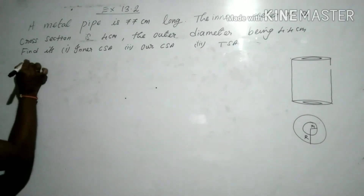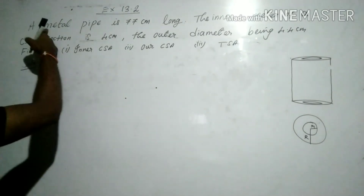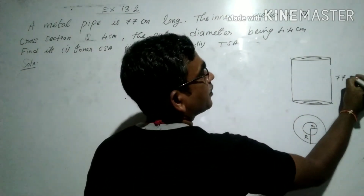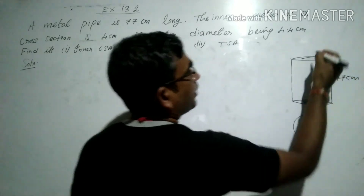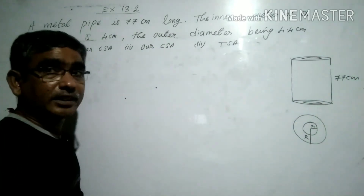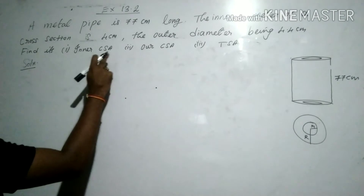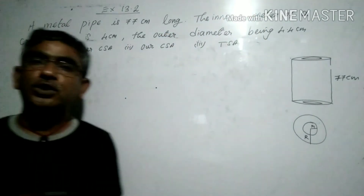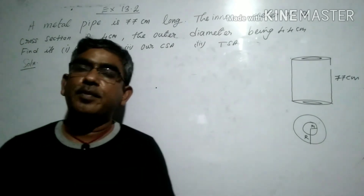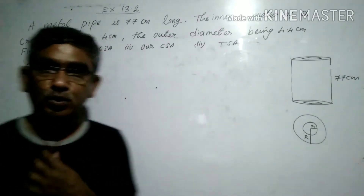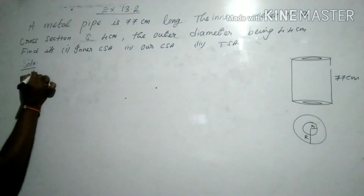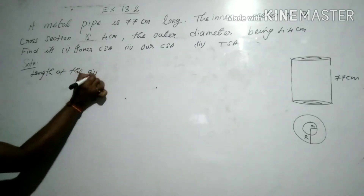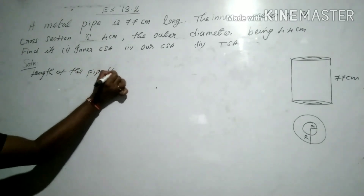First of all, what is the length of the pipe? That is called the height of the cylinder. The metal pipe is 77 centimeters long, so the height of the pipe is 77 centimeters. The length of the pipe we call the height, which is equal to 77 centimeters.